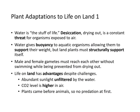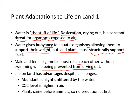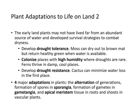So how did plants adapt to live on land? Water is the stuff of life, and desiccation or drying out is a constant threat for organisms exposed to air. Water gives buoyancy to aquatic organisms, allowing them to support their weight — which is why whales can be so big. Land plants must structurally support themselves, and male and female gametes must reach each other without swimming or drying out. But life on land has advantages: abundant sunlight is unfiltered by water, CO2 levels are higher in air, and plants came before animals so there was no predation at first.